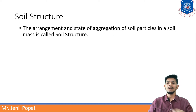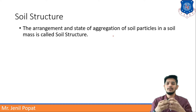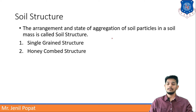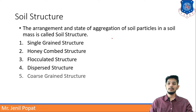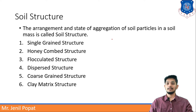So it is an arrangement, or we can say a bonding, arrangement or aggregation. These are different types of soil structures: first, single grain structure; honeycomb structure; flocculated structure; dispersed structure; coarse grain structure; and clay matrix structure. These are the different types of soil structure. Let us discuss them individually.